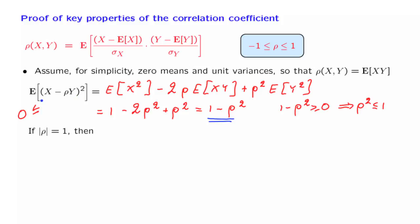Now, here we have a non-negative random variable. And its expected value is 0, which means that when we calculate the expected value of this, there will be no positive contributions. And so the only contributions must be equal to 0. This means that x minus ρ y has to be equal to 0 with probability 1.